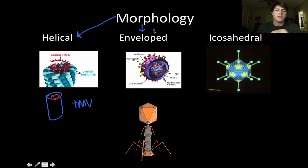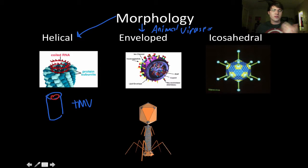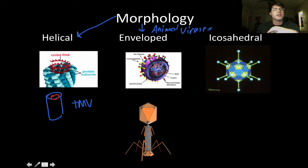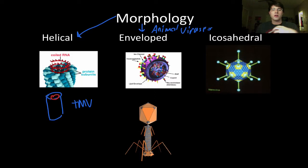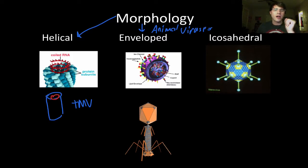Then we have the enveloped virus, which is sometimes colloquially referred to as an animal virus because they're good at infecting animals like us — that's where they came from. They have a phospholipid bilayer, but we call it an envelope rather than a membrane because a membrane implies something living, and viruses aren't living. It keeps polar molecules out and has ion channels and glycoproteins for host compatibility.